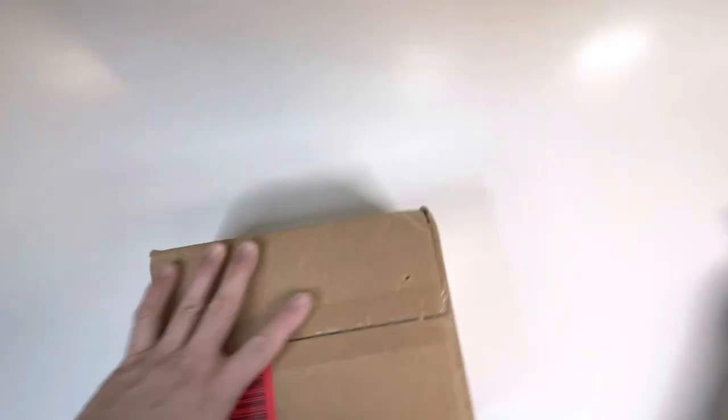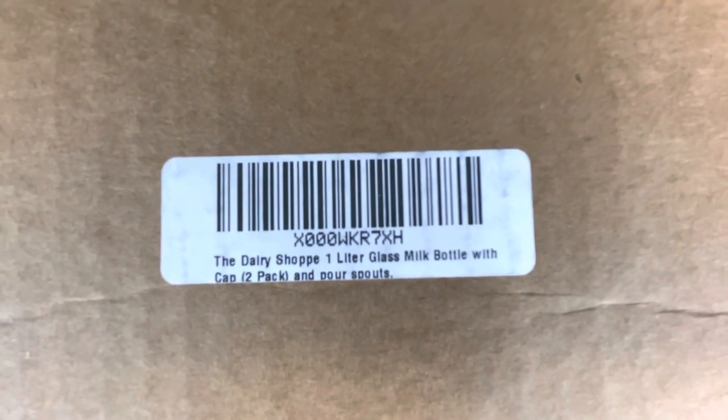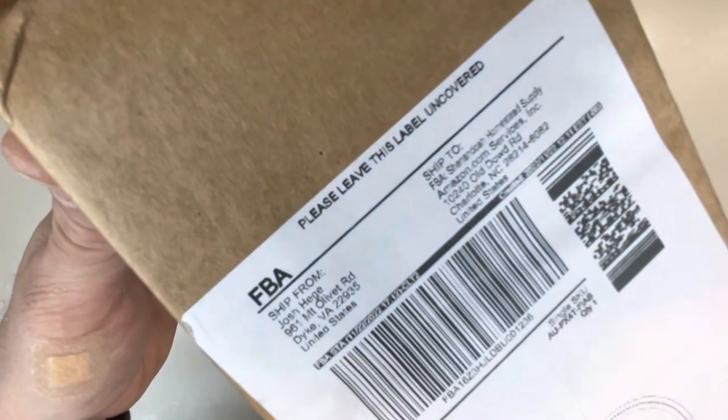We're back and we got a big old box of something here. What do we got? The Dairy Shop one-liter glass milk bottle caps and pour spouts. Kind of interesting - shipped from